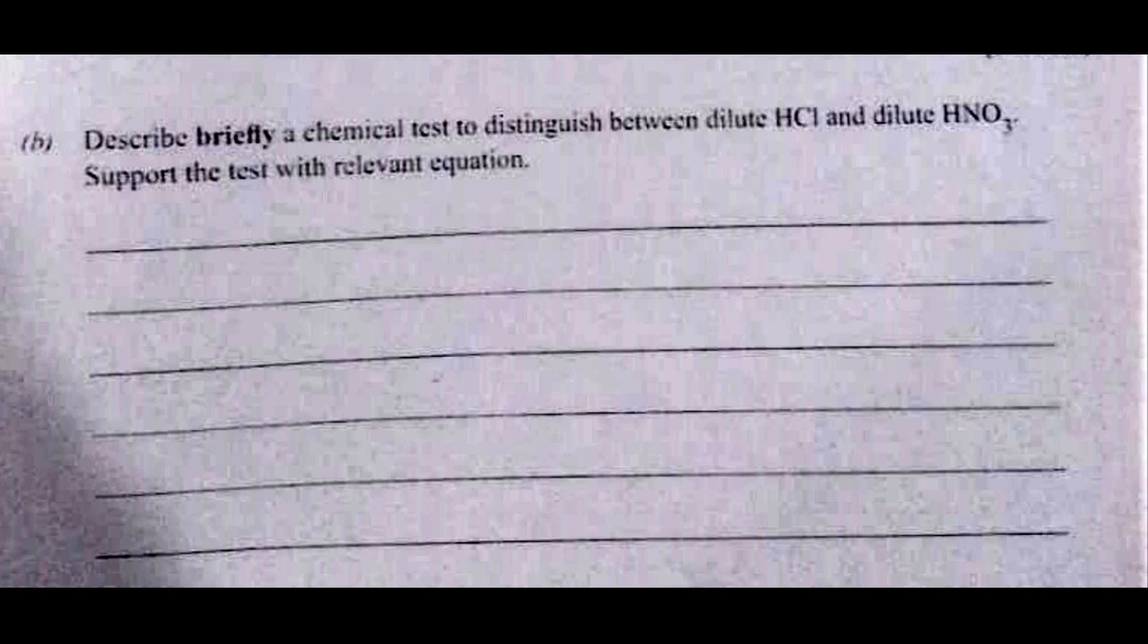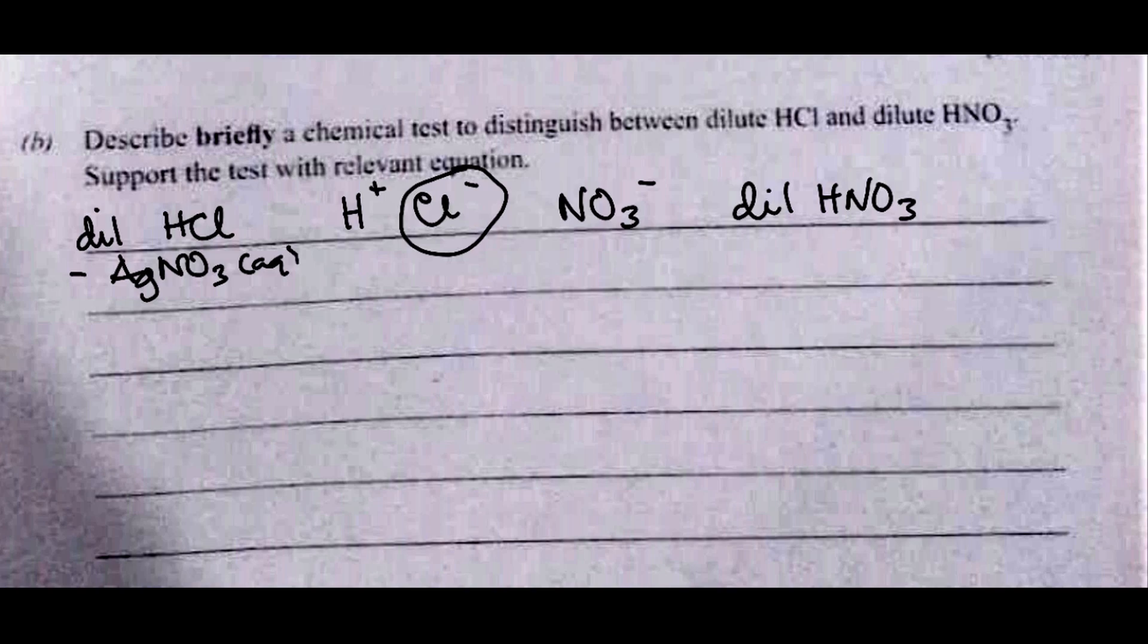Let's look at the last question briefly. Describe a chemical test to distinguish between dilute HCl and dilute HNO3. Support the test with relevant equation. So you have two colorless solutions. How will you know which one is dilute HCl or dilute HNO3? Both contain hydrogen ions, but this one contains chloride ion, this one contains NO3⁻ ion. Which reagent do you use to test for chloride ion? This one is easier to test for. You are going to use silver nitrate solution.